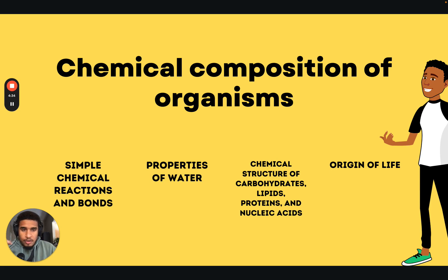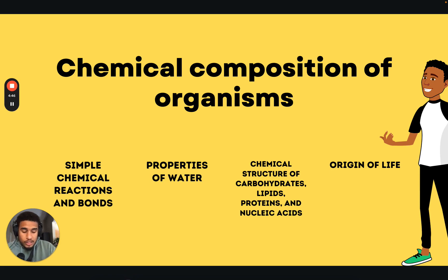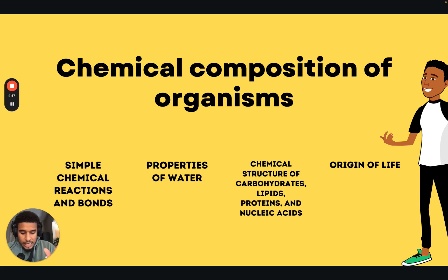Now let's talk about chemical structures of carbohydrates. You need to know that carbohydrates are organic compounds composed of carbon, hydrogen, and oxygen in a ratio of 1 to 1. You also need to understand the chemical structure of a monosaccharide, or glucose. So you need to know that.